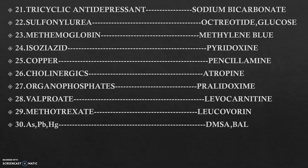Whenever organophosphate poisoning occurs, we use pralidoxime. In case of valproic acid, that is levocarnitine. For methotrexate, it is leucovorin. In case of heavy metals like arsenic, lead, and mercury, we use BAL (British anti-Lewisite) and sometimes DMSA.